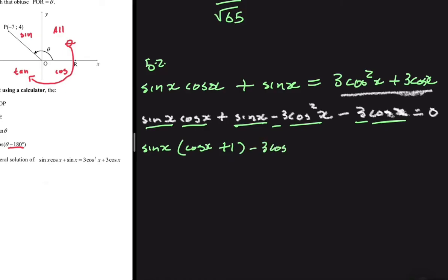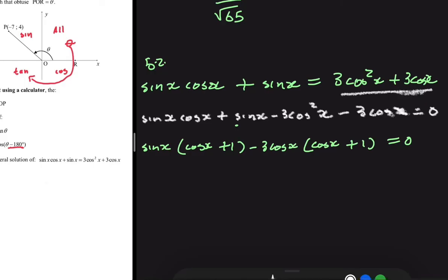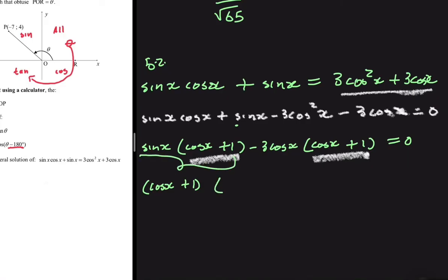If we take minus 3cos(x) as a common factor for the last two terms, for the first term we're left with cos(x), and for the second term we're left with plus 1. So we have minus 3cos(x) times (cos(x) + 1), and this all equals zero. Now I'm realizing I have (cos(x) + 1) in both groups, so why not take that as a common factor again?